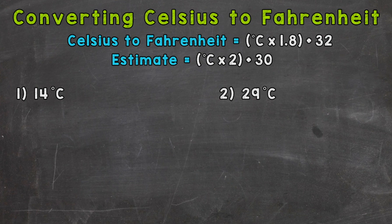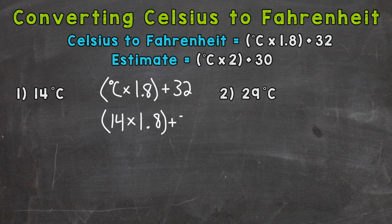So let's jump into number one, where we have 14 degrees Celsius. We will rewrite our formula first. We have degrees Celsius times 1.8 plus 32. We need to plug in what we're given, and we're given 14 degrees Celsius. That's what we're converting. Bring everything else down here. Now we're ready to solve.